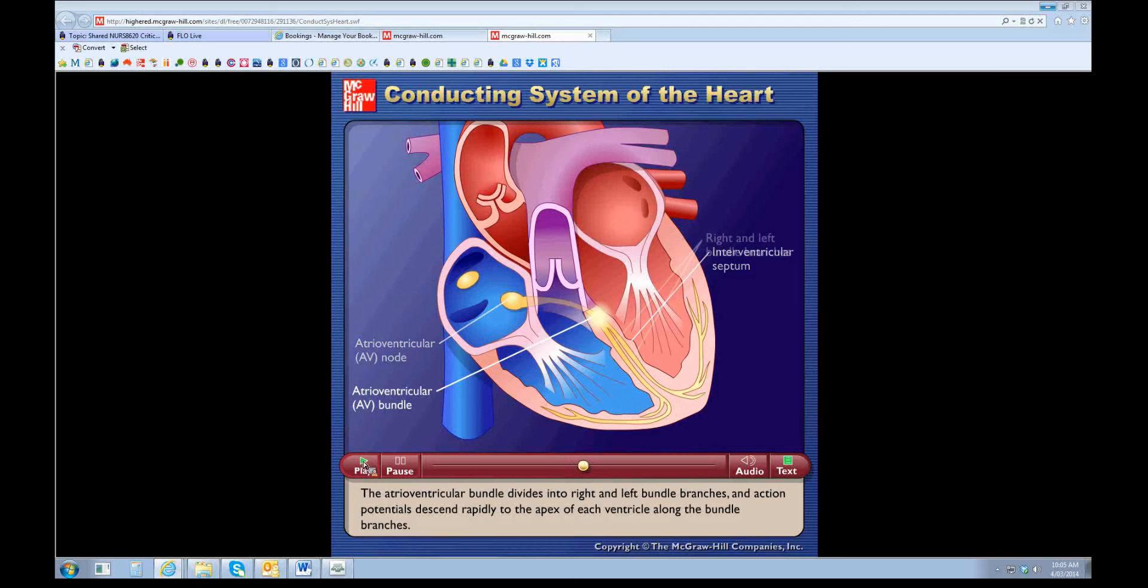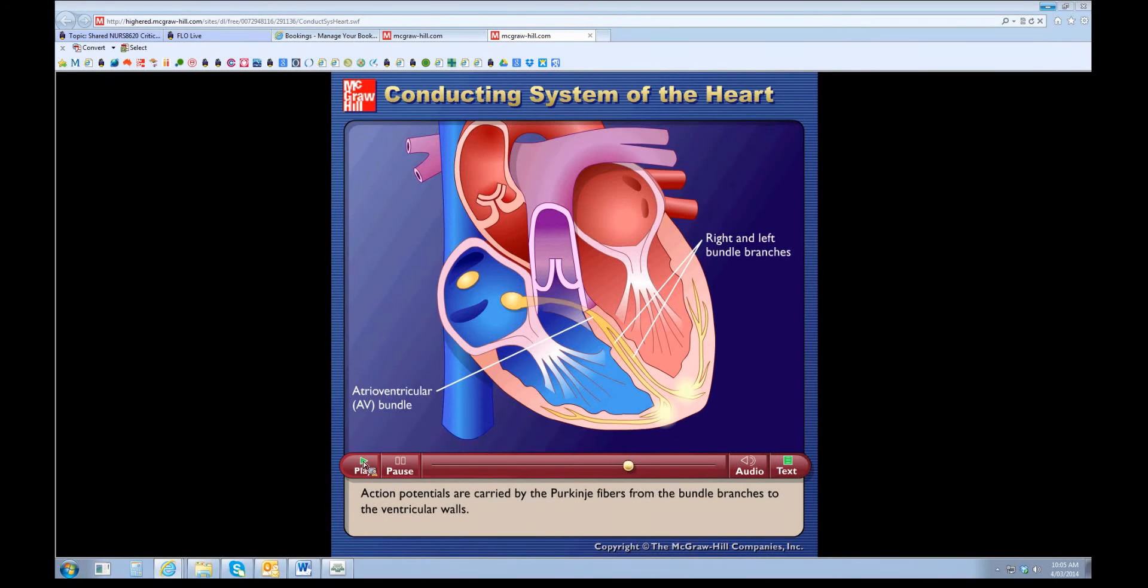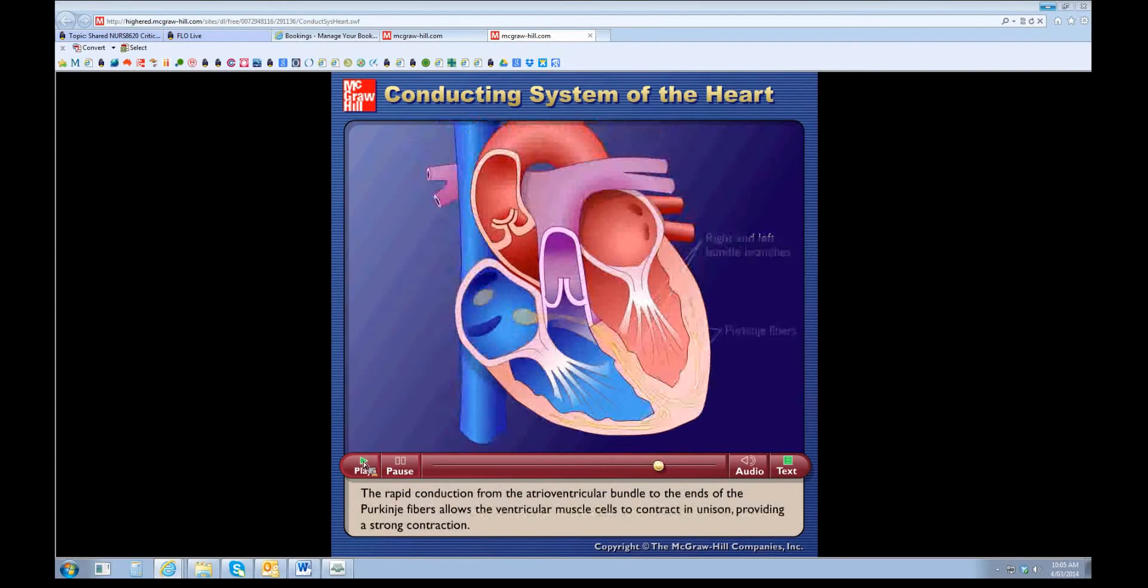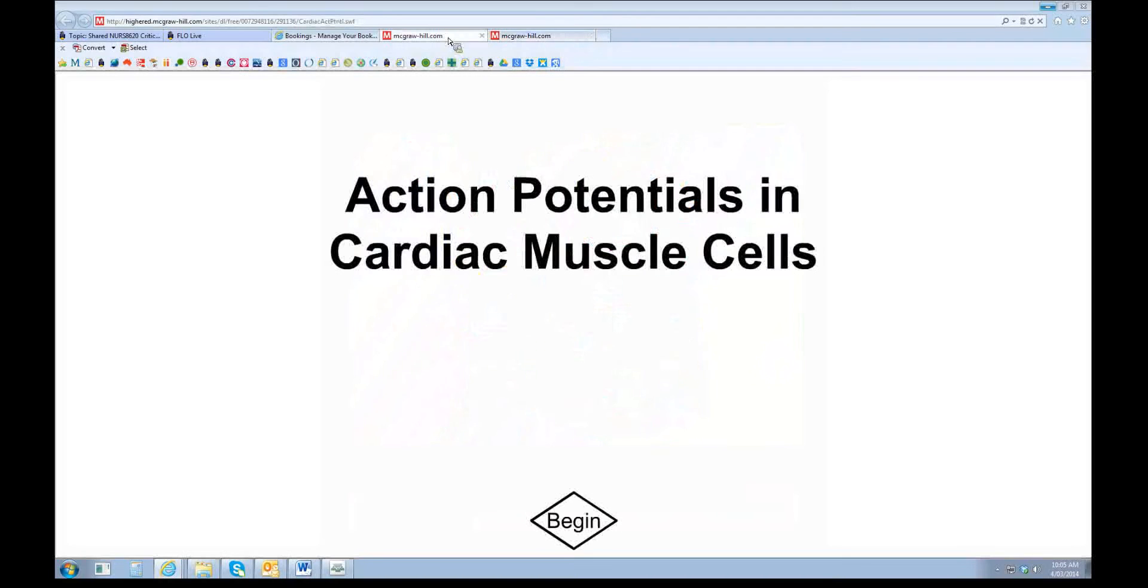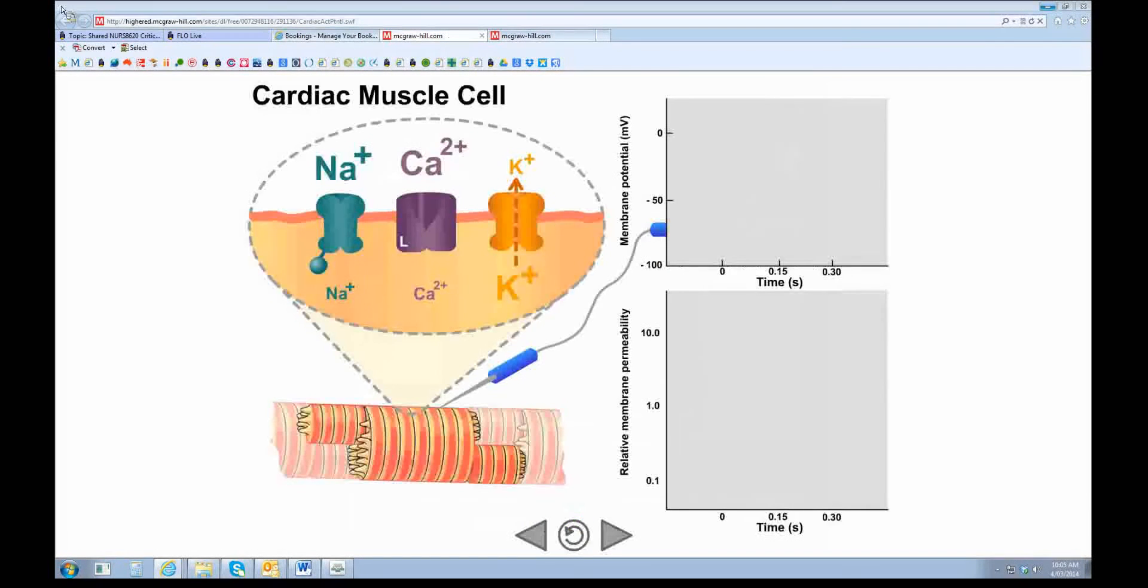Then it goes through the septum and it does that quite quickly, so we can get a really strong contraction from the ventricles. It goes up the Purkinje fibers to the ventricle, and then we get this lovely coordinated contractions.